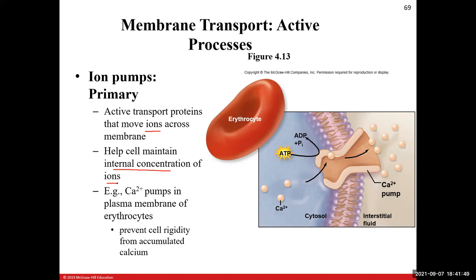Another critically important plasma membrane pump is the sodium-potassium ion pump. Its basic job is to move sodium out of the cell and potassium into the cell. For every three sodium ions this pump moves out of the cell, it pumps two potassium ions into the cell, and that costs just one ATP molecule.